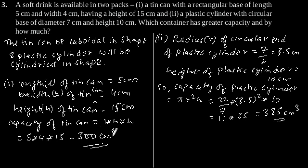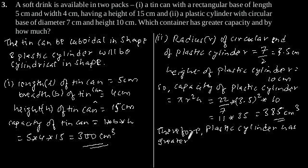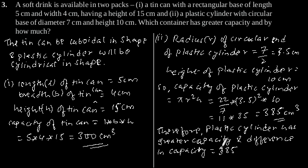So, here we can clearly see that plastic cylinder has greater capacity. Therefore, plastic cylinder has greater capacity and difference in capacity is 385 minus 300 which is equal to 85 cm³.